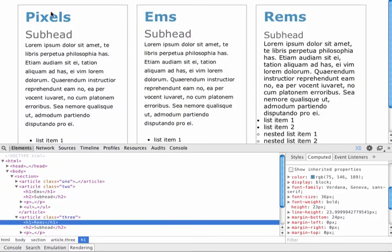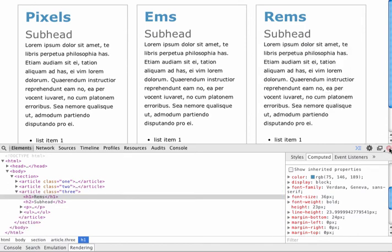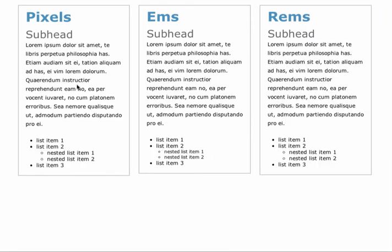After saving and refreshing in the browser, we can now see that the sizing and spacing of all three articles — pixels, ems, and REMs — are essentially the same. There is an issue with the nested list in the em article. When we use REMs though, we don't have that issue. This is a big reason why REMs might be a better unit, especially when making styles that are going to be nested.